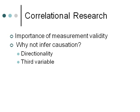The other issue is the third variable problem: if there's a correlation between A and B, it could be explained by some causal relationship where A causes C, which causes B. For example, there is a correlation between the number of ashtrays in people's houses and the likelihood of getting cancer. Having ashtrays doesn't cause cancer, but ashtrays are associated with smoking, and smoking is causally associated with cancer. So there's that third variable that explains the relationship between the two other variables.